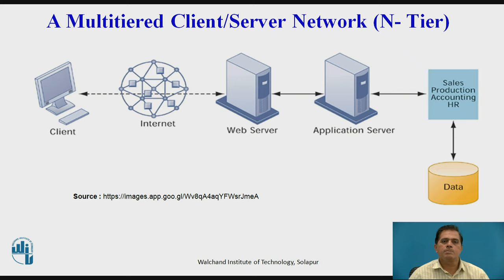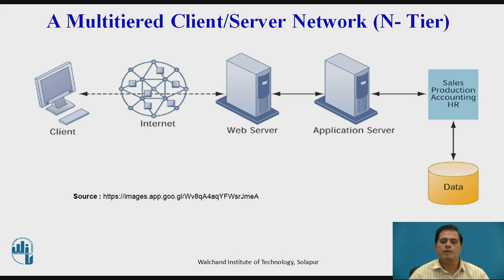The next evolution is the multi-tiered client-server network. Clients are directly connected to the internet and web server, application server, and main data servers. Clients can send data to the data server via the internet, and receive updated data back from the server. These multi-tiered client-server networks are very useful for enterprises processing large amounts of data, which is why most companies and organizations utilize them.